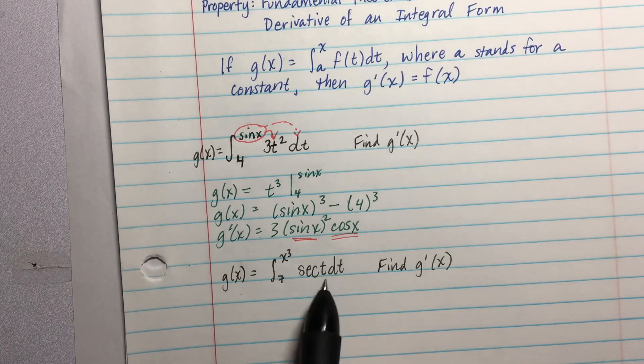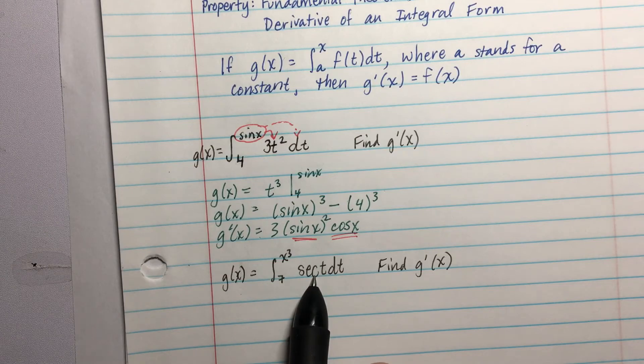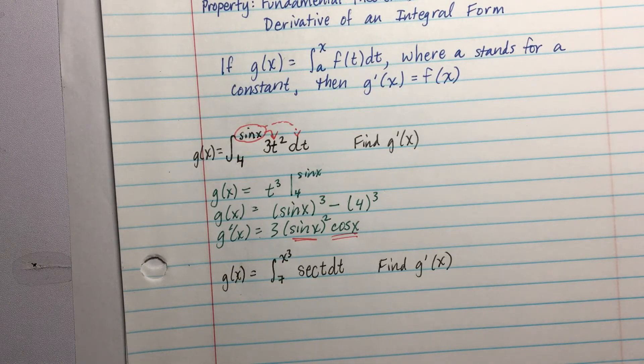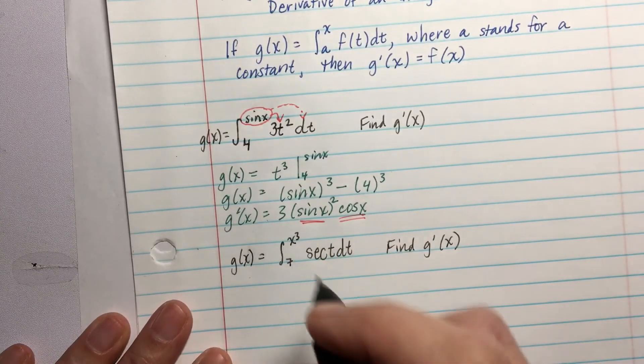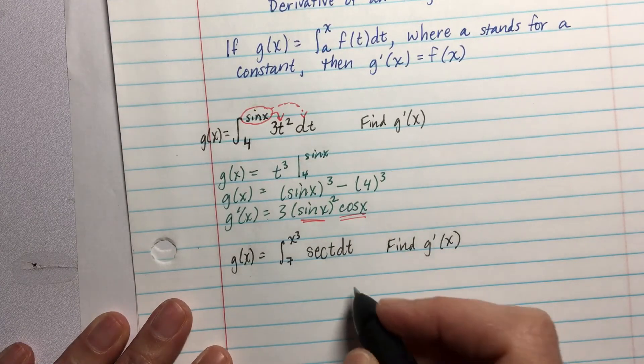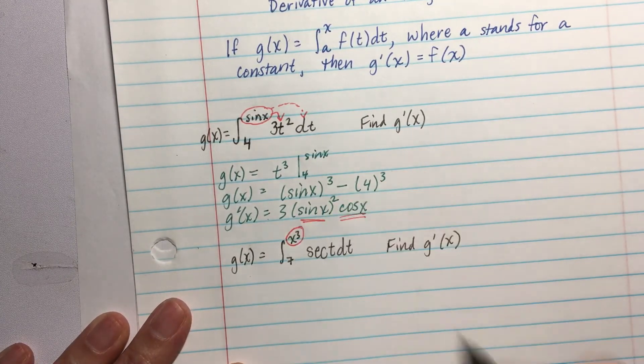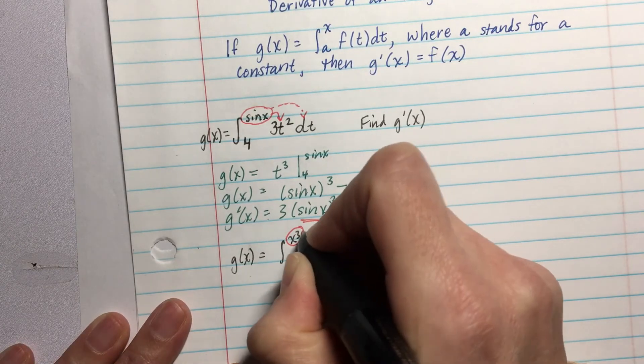Well, I don't know what secant integrates to. But if I'm going to integrate it and then derive it, I'm going to be back to where I started. So we can totally kind of cheat on this. Take this x³, plug it in for t, and also